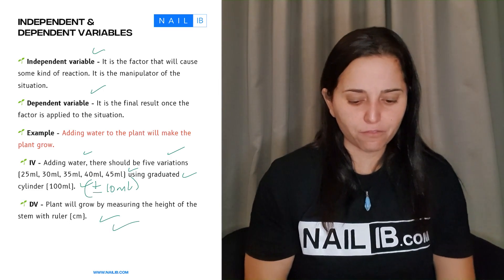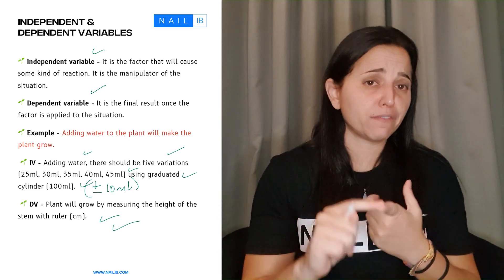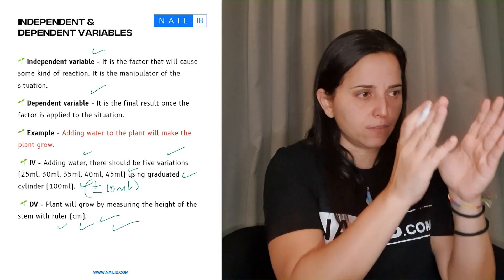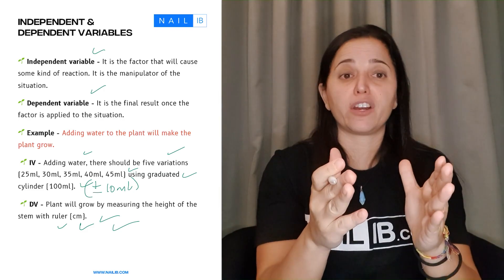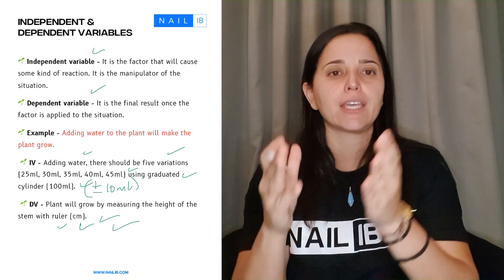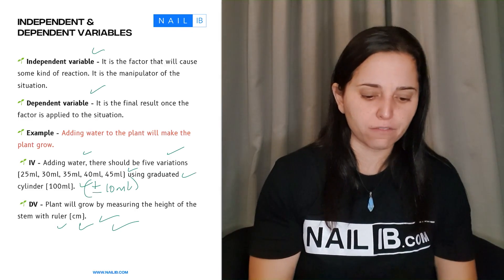Same thing with the dependent variable here. You put the dependent variable, you put the units and the equipment. So whatever the variable is, variation, whatever the unit is, and the equipment that you're using. That's how you state for the independent variables.